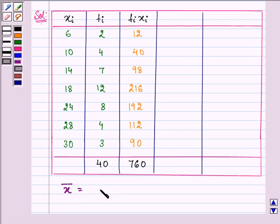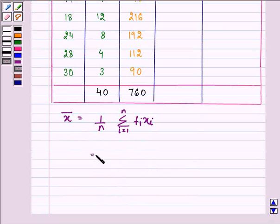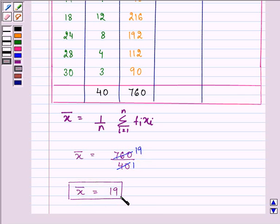So the mean is equal to 1 upon n summation fi xi where i equals 1 till n. So on substituting the values we have 760 upon 40 as our mean and on simplification we have the answer as 19. So 19 is the mean of the question.